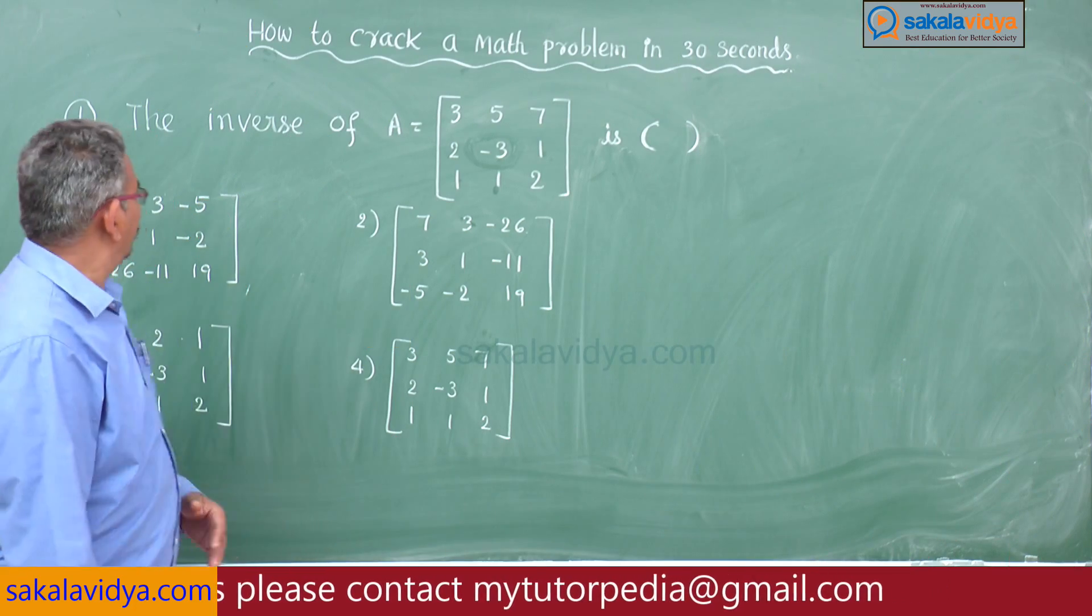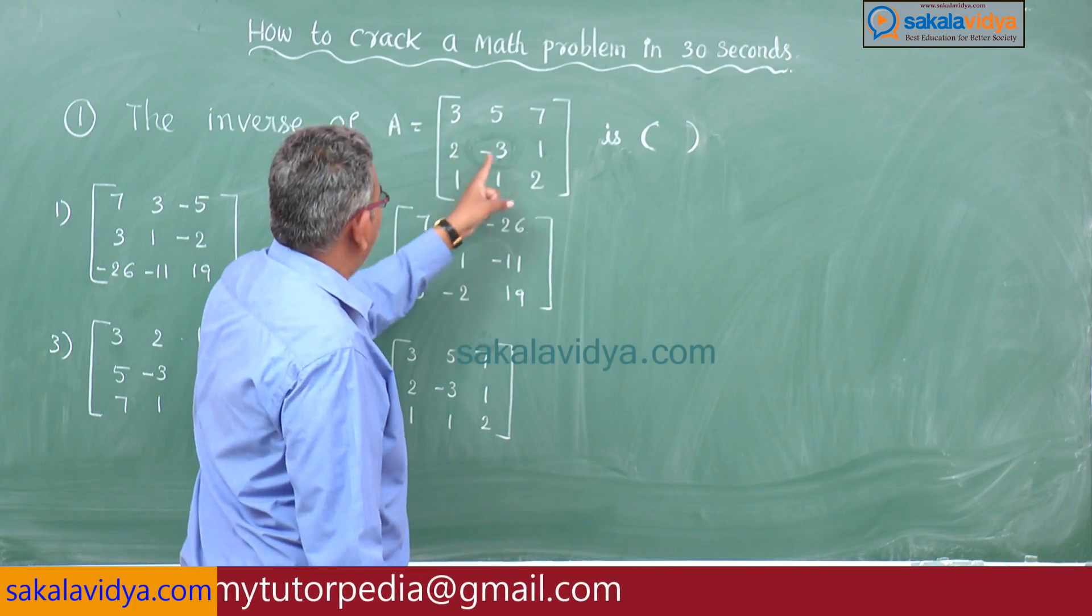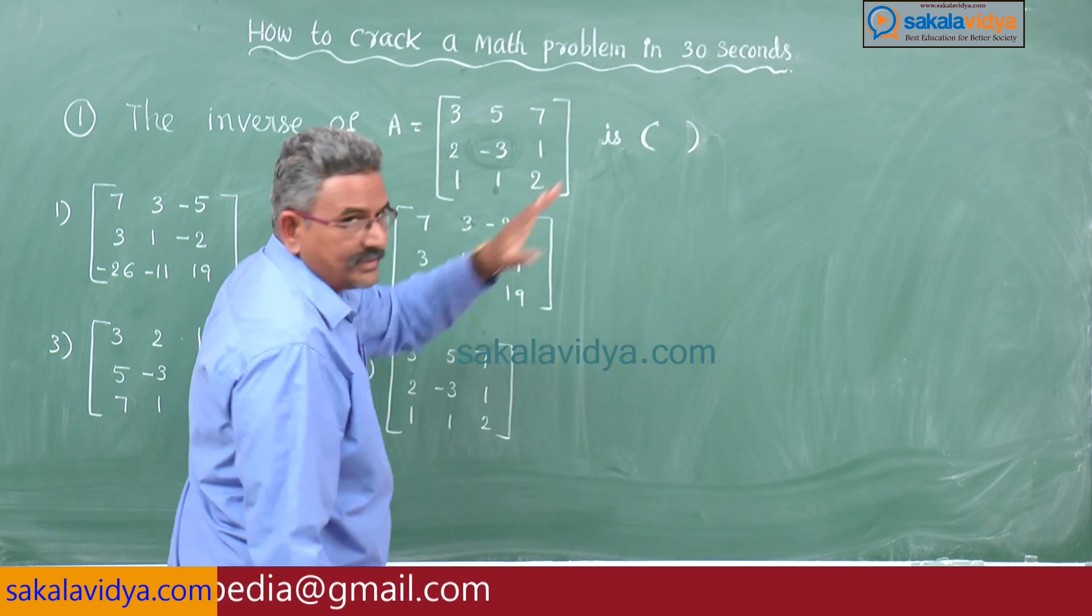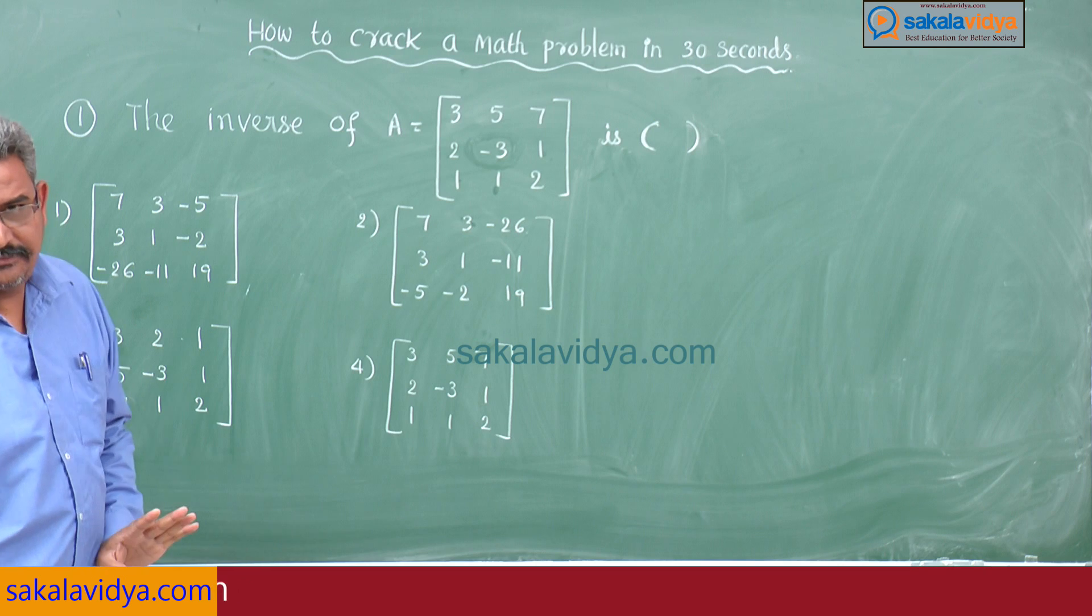First problem: the inverse of A equals [3, 5, 7; 2, -3, 1; 1, 1, 2]. First option, second option, third option, fourth option.